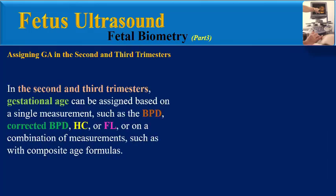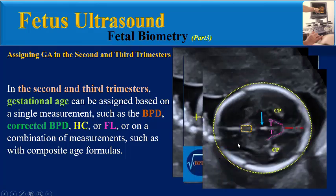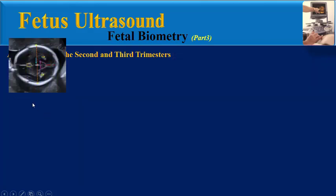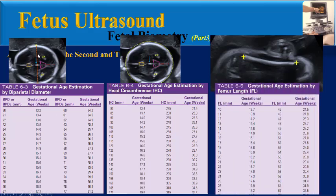In the second and third trimesters, gestational age can be assigned based on a single measurement such as the BPD, corrected BPD, HC, or FL, or a combination of measurements such as with composite age formulas. For each of these biometric parameters, there are specific tables to assign gestational age according to our measurement.